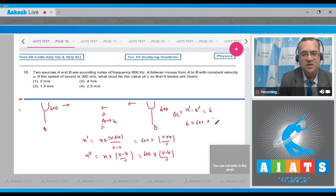What is v given? 300. So 6 is equal to 600 into 2u divided by 300, and that gives you the velocity u equal to 1.5 meter per second. The option is third option to this question.